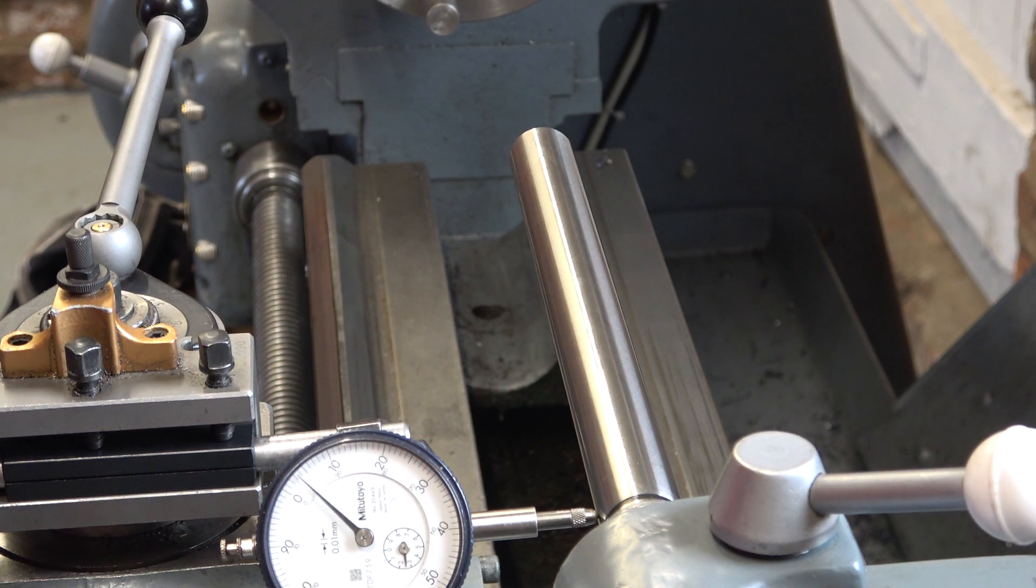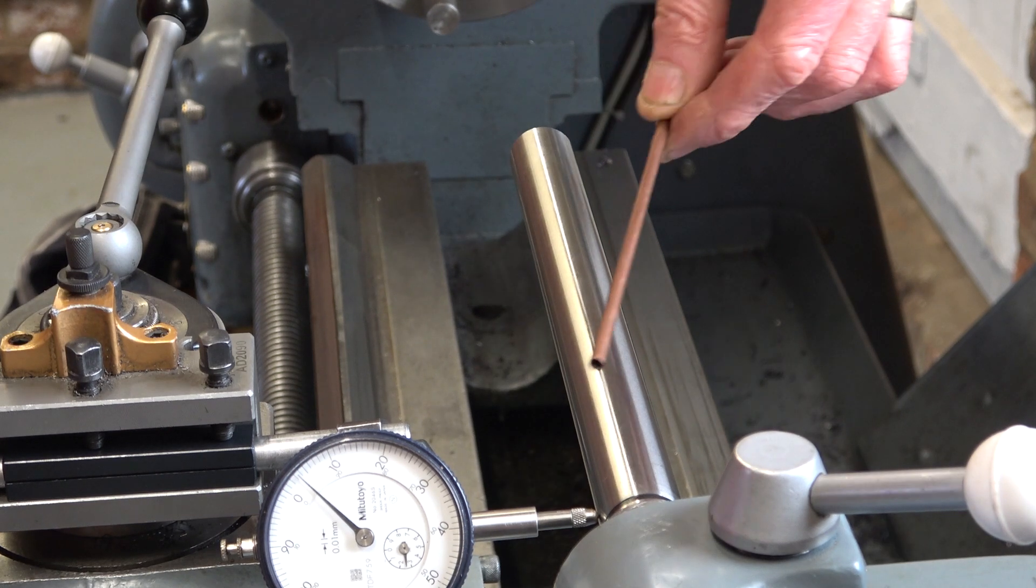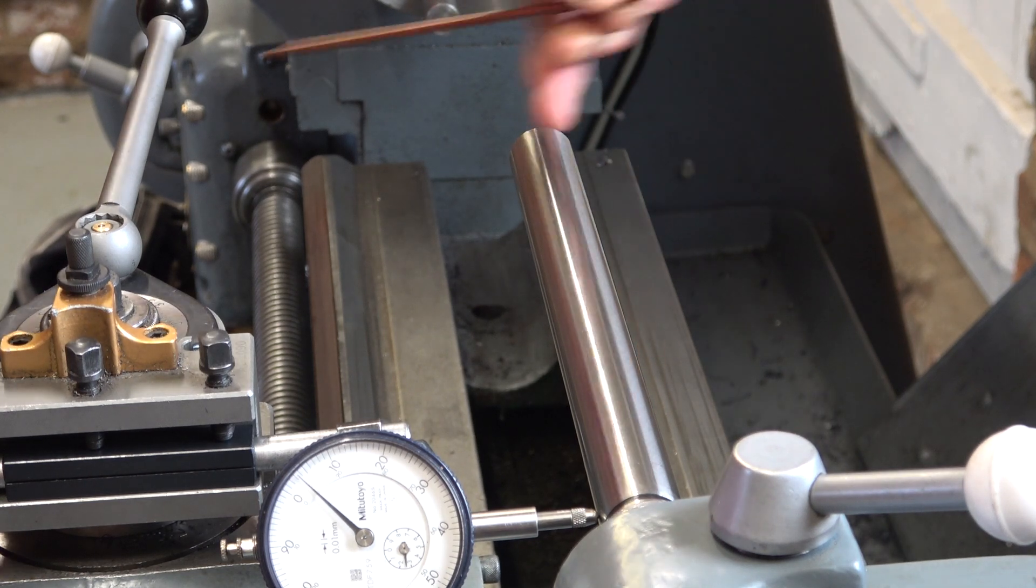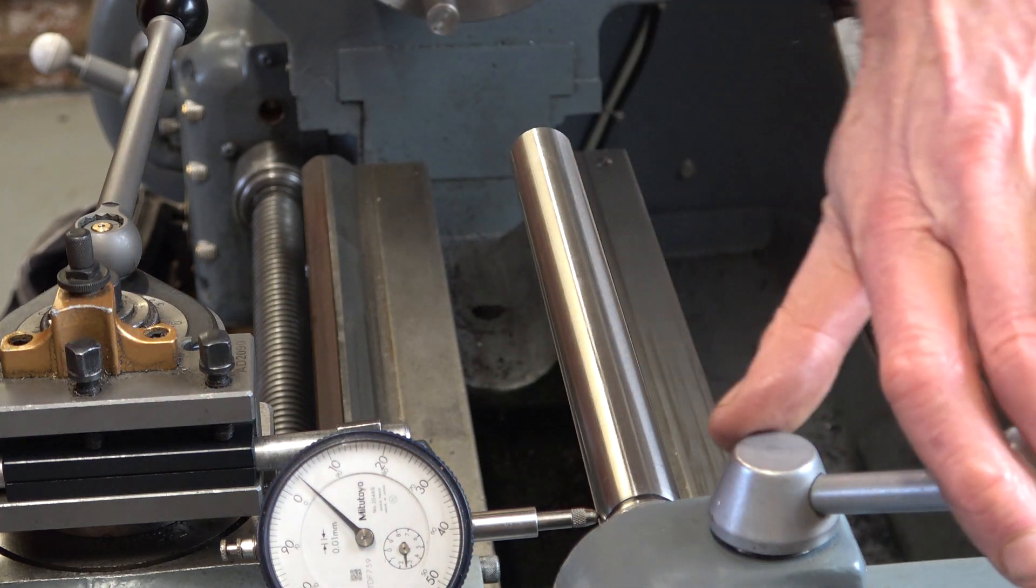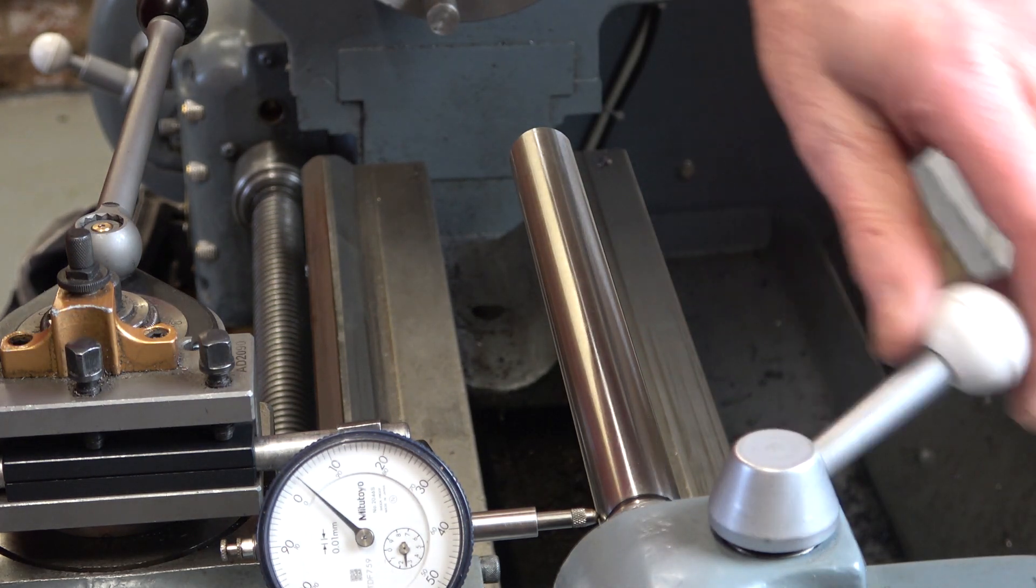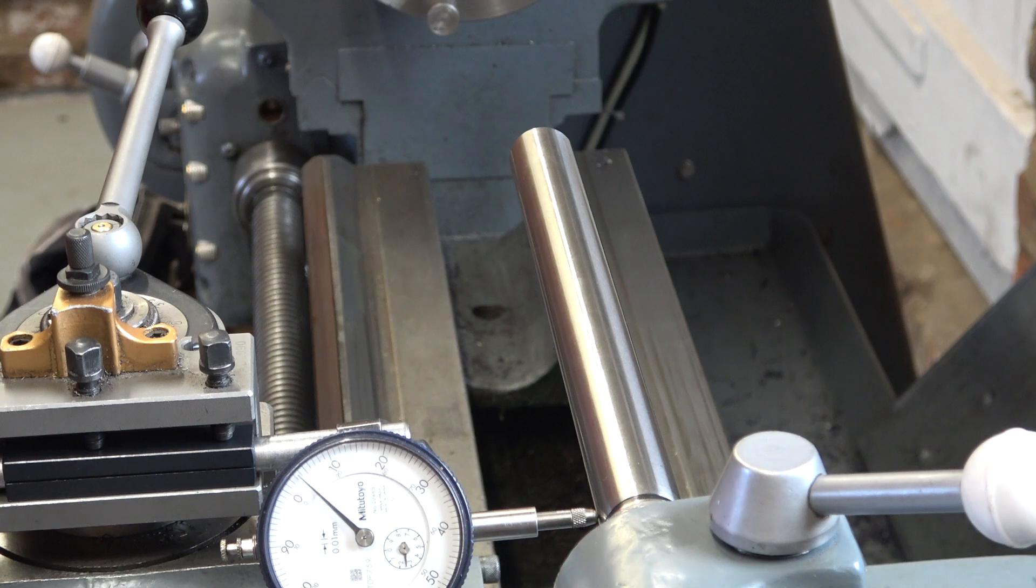Okay the needle's moved off about three one hundredths of a millimetre slightly more, so about 1.3 thou and it's closer at this end so the test bar is moving over towards the wall there and if I release the clamp it has almost no effect at all.